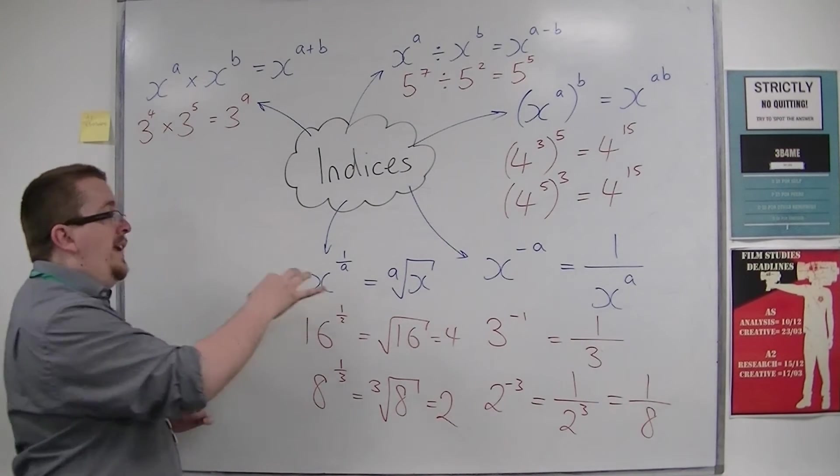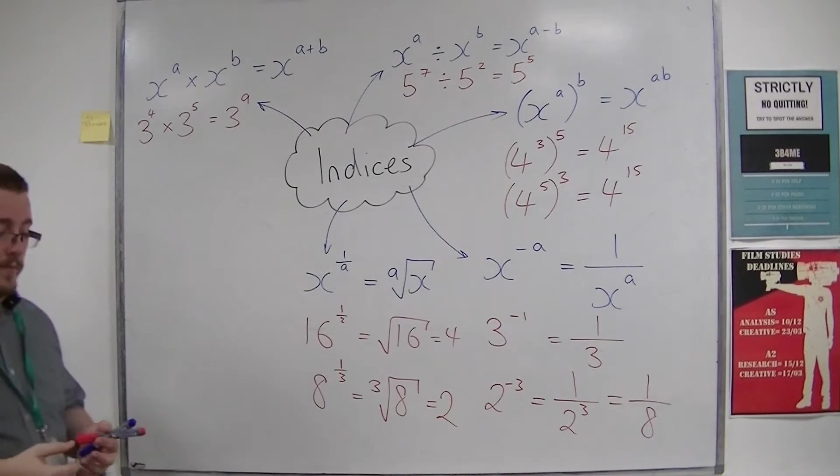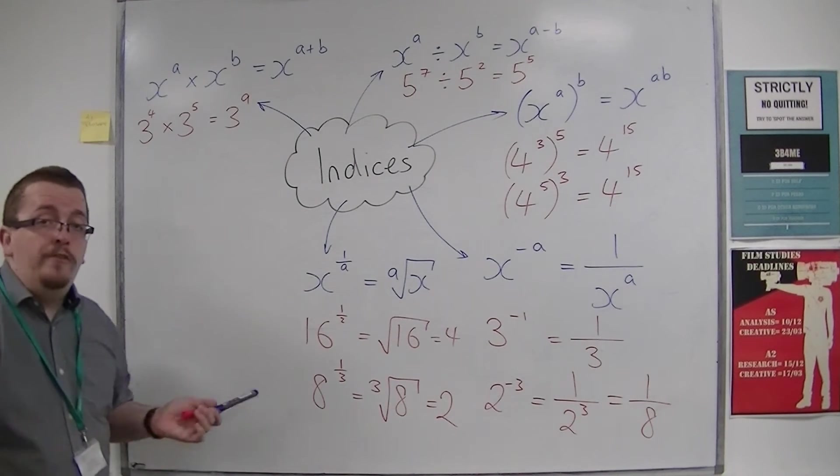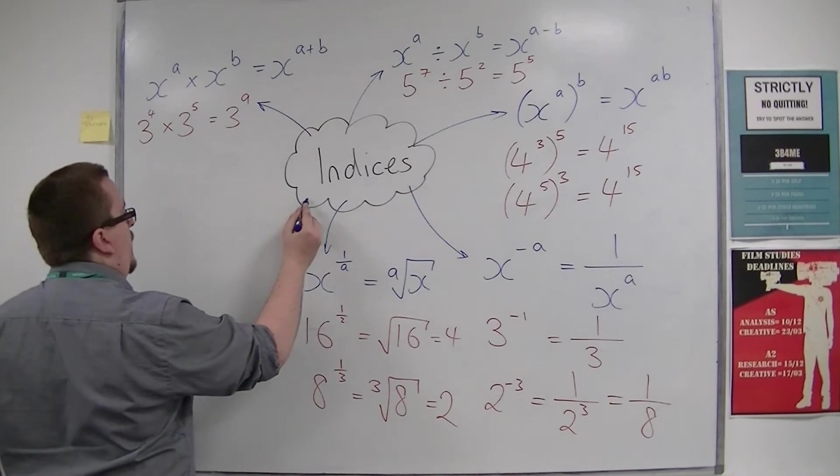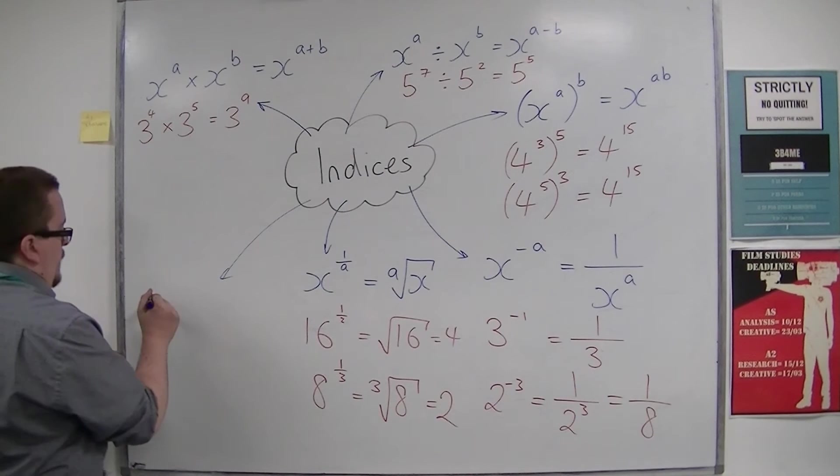So you need to know about negative indices and fractional indices. So how about if you combined them? Let's do an example rather than a rule. Well, we can write it down as a rule.